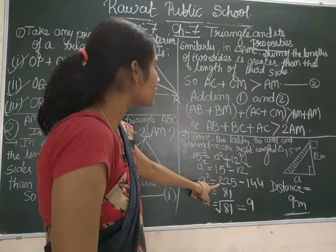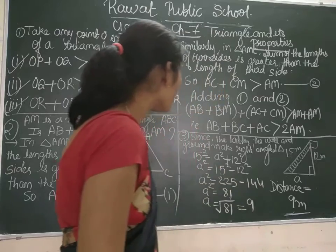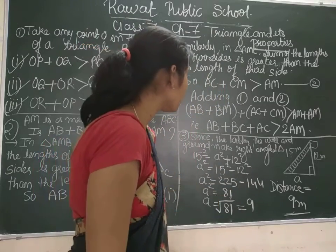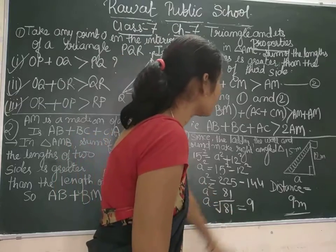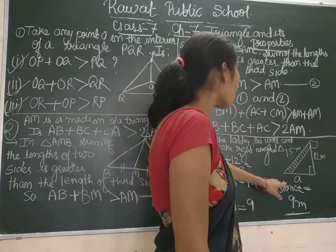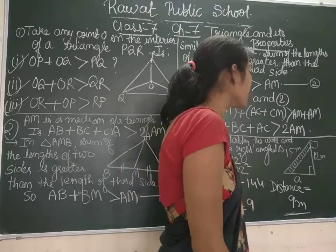15 square is 225 minus 12 square is 144. So A square is equal to 81. A is equal to root 81, is equal to 9. So distance of ladder from the wall is 9 meter.